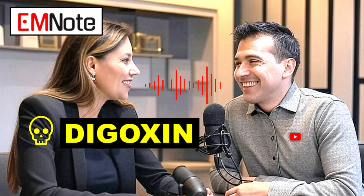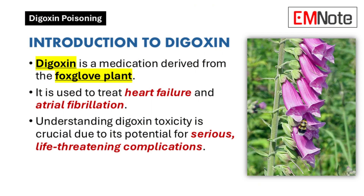Welcome to the Deep Dive. Let's break down digoxin — what is it, where does it come from, what does it do? Digoxin comes from the foxglove plant, and we use it to treat heart failure and atrial fibrillation. It helps the heart muscle contract with more force. However, too much digoxin can be toxic — it can throw off the heart's rhythm, cause electrolyte imbalances, and even affect other organ systems.